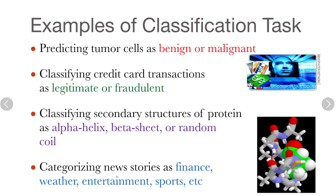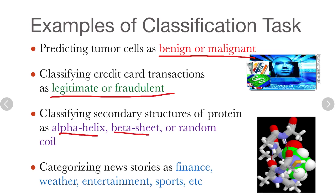Let us focus on classification. There are many examples of classification tasks: predicting tumor cells as benign or malignant; classifying credit card transactions as legitimate or fraudulent; classifying secondary structures of protein as alpha helix, beta sheet, or random coil; and categorizing news stories such as finance, weather, entertainment, and sports. The class labels would be benign or malignant, legitimate or fraudulent, alpha helix, beta sheet, or random coil.